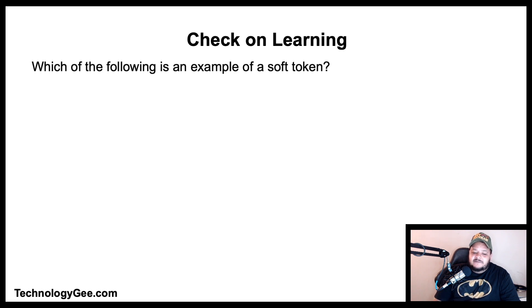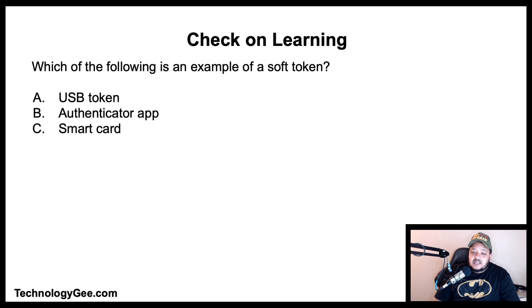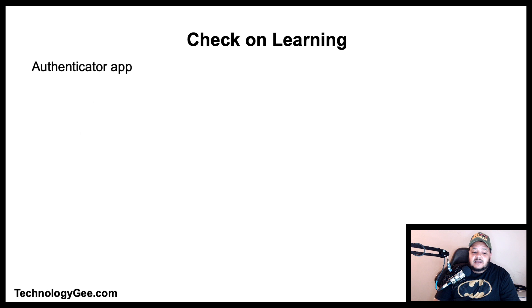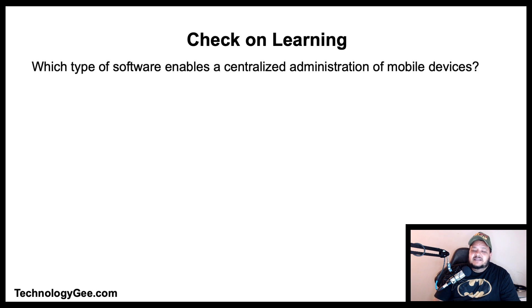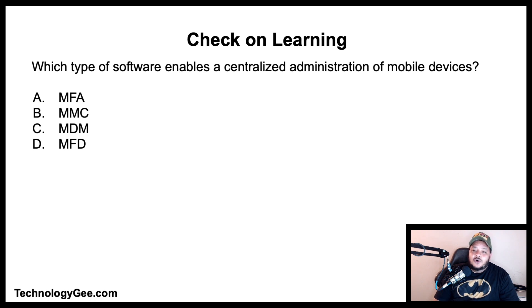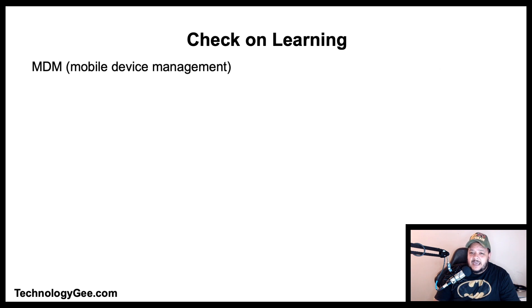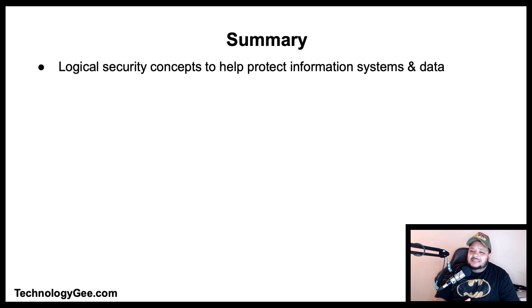Next question: which of the following is an example of a soft token? Is it a USB token, an authenticator app, a smart card, or a key fob? The correct answer is an authenticator app, like the Google Authenticator app. Final question: which type of software enables centralized administration of mobile devices — MFA, MMC, MDM, or MFD? The correct answer is MDM, or mobile device management.